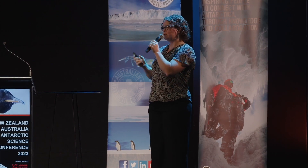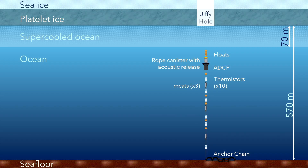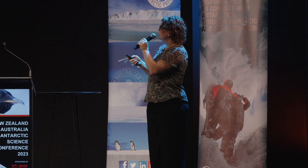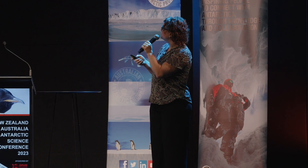We faced two further challenges. One is that we need to put this through and recover it through a jiffy hole only 25 centimetres wide — quite a challenge. The other is that the upper 70 metres of the ocean is supercooled, so anything we put in that section of the water column is going to attract rapid ice growth and be very difficult to recover. So we wanted to avoid the upper 70 metres.